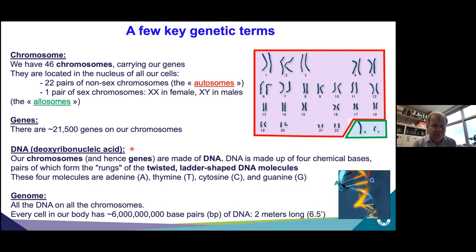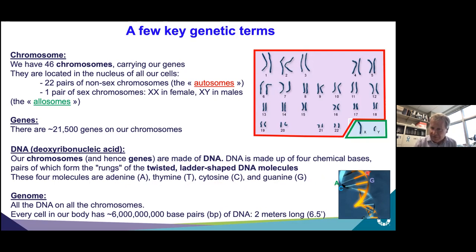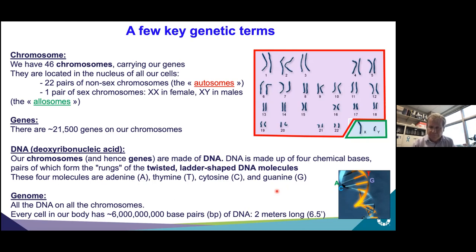DNA is what chromosomes and genes are made of. It's a double helix twisted structure where the coding sequences — thymine, cytosine, guanine, and adenine — are in the middle. A binds with T, and C binds with G. It's a coding molecule: it splits in half to make another strand using these binding pairs. The genome is all of the DNA and all of the genes on our chromosomes — about six billion base pairs, which would stretch about two meters or six and a half feet.